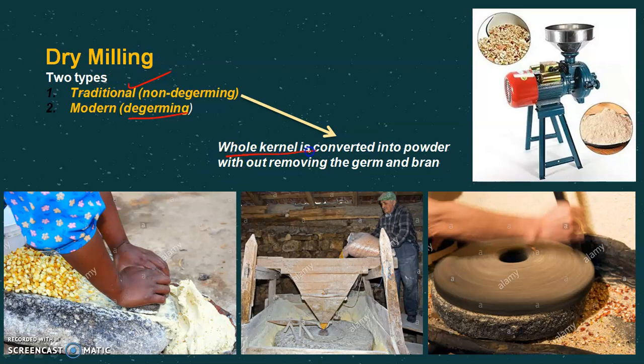In traditional dry milling, the whole kernel is converted into powder without removing the germ and the bran. So we can say the extraction rate of traditional dry corn milling is 100 percent.